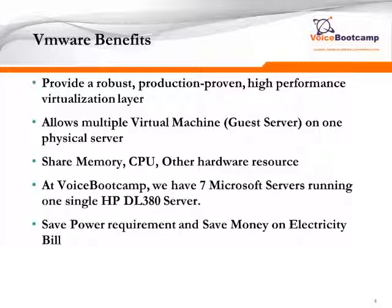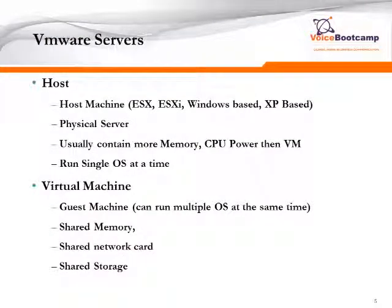Because instead of running seven different servers with seven different connections to the electrical outlet, we're just running one powerful server with one electrical outlet, and we save money on the electricity bill as well. VMware servers are divided into two: a host and a virtual machine. The host is the main server, which can run ESX — a VMware-owned operating system based on Linux — or ESXi, which is a free version of ESX, as well as Windows-based VMware and workstation-based running on XP. The host machine has to physically run on a physical server, such as a DL380, IBM, or HP server.